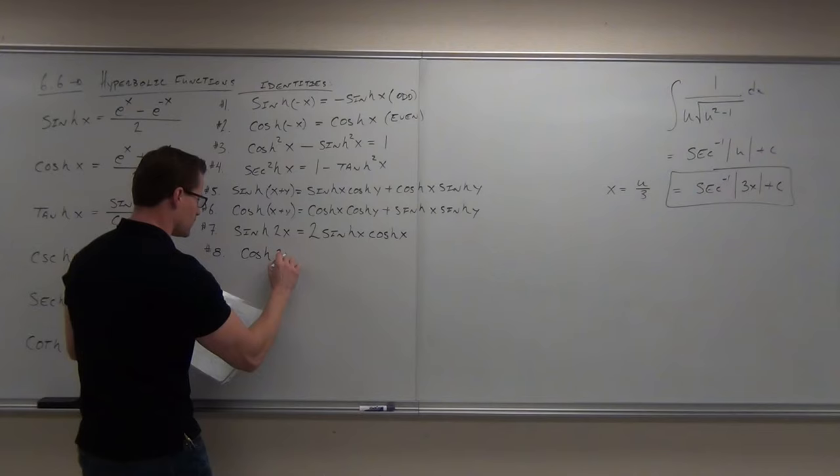Now let's do cosh — this one's going to blow your minds. The derivative of cosh(x) is the derivative of (e^x + e^(-x)) / 2. Derivative of e^x is e^x, derivative of e^(-x) is negative e^(-x). So we get (e^x - e^(-x)) / 2 — that's just cinch, not negative. The derivative of cosh is sinh.